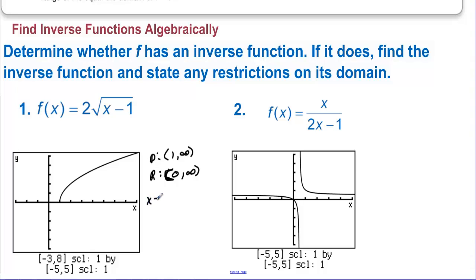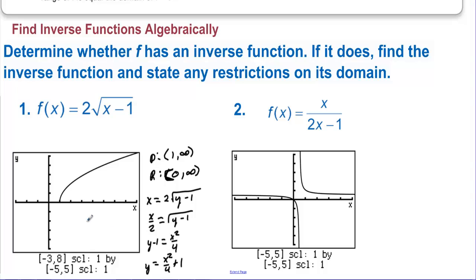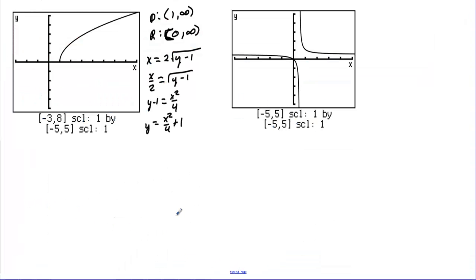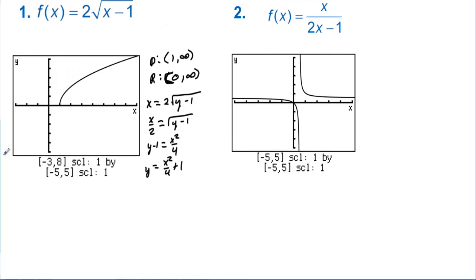Now let's find the inverse. We plug x in for y and y in for x. We have y minus 1 — let's divide by 2 — so x over 2 equals the square root of y minus 1. Squaring both sides: y minus 1 equals x squared over 4. Adding 1: y equals x squared over 4 plus 1. The result has no radicals and no variables in the denominator. The new domain inherits the range of the original function, so the domain is [0, infinity).